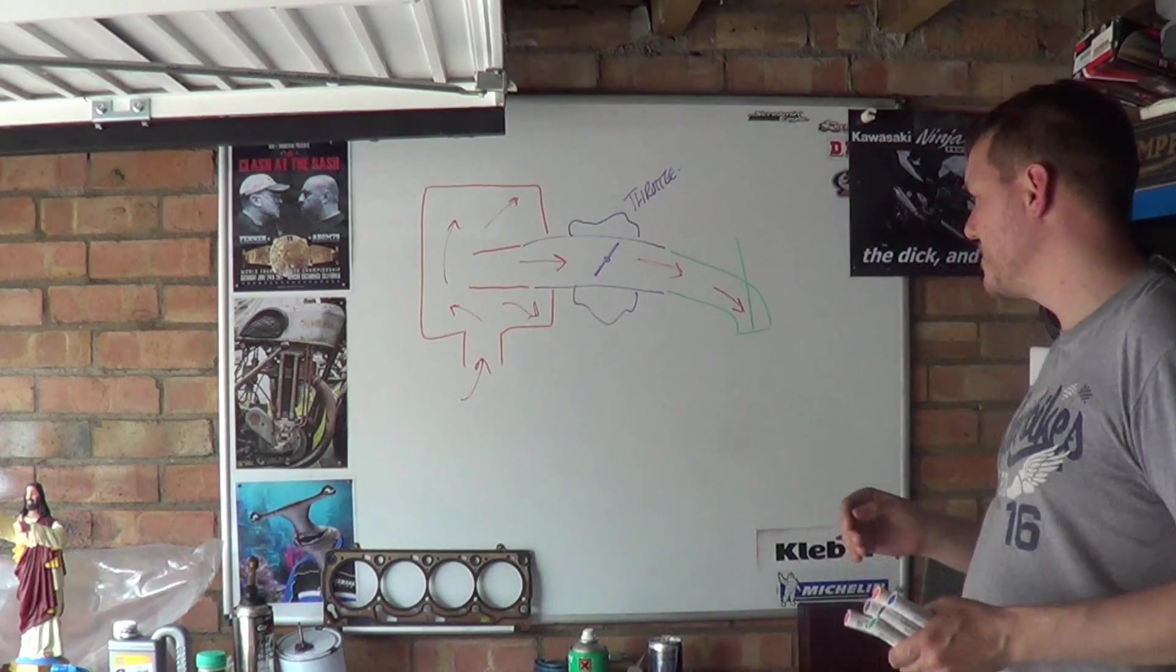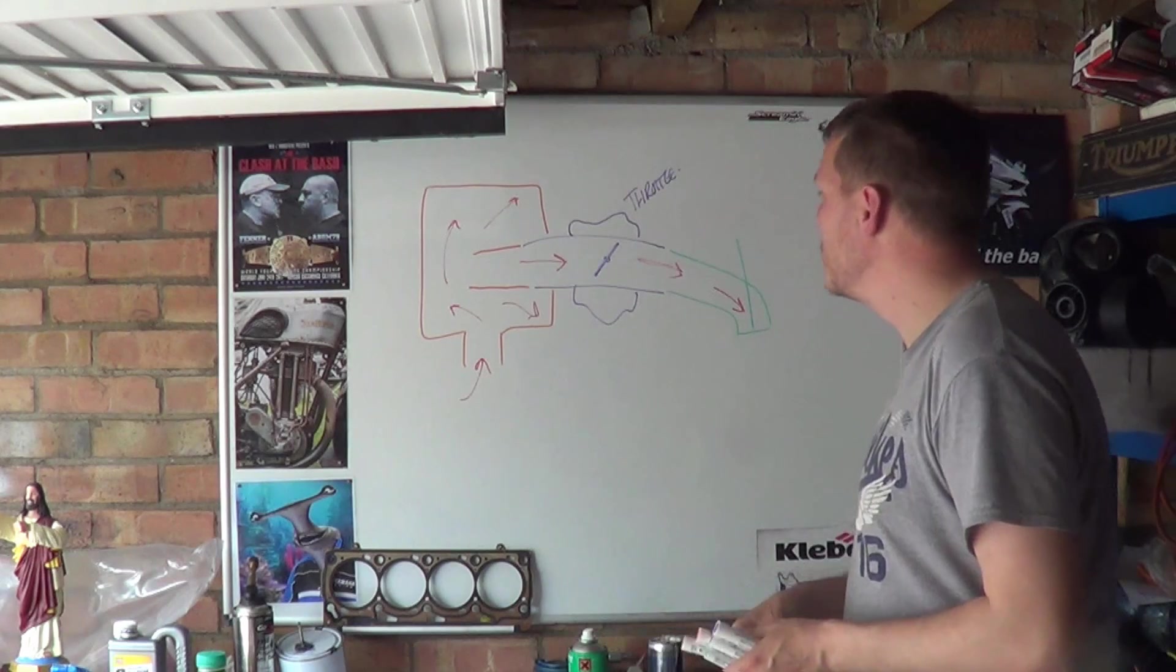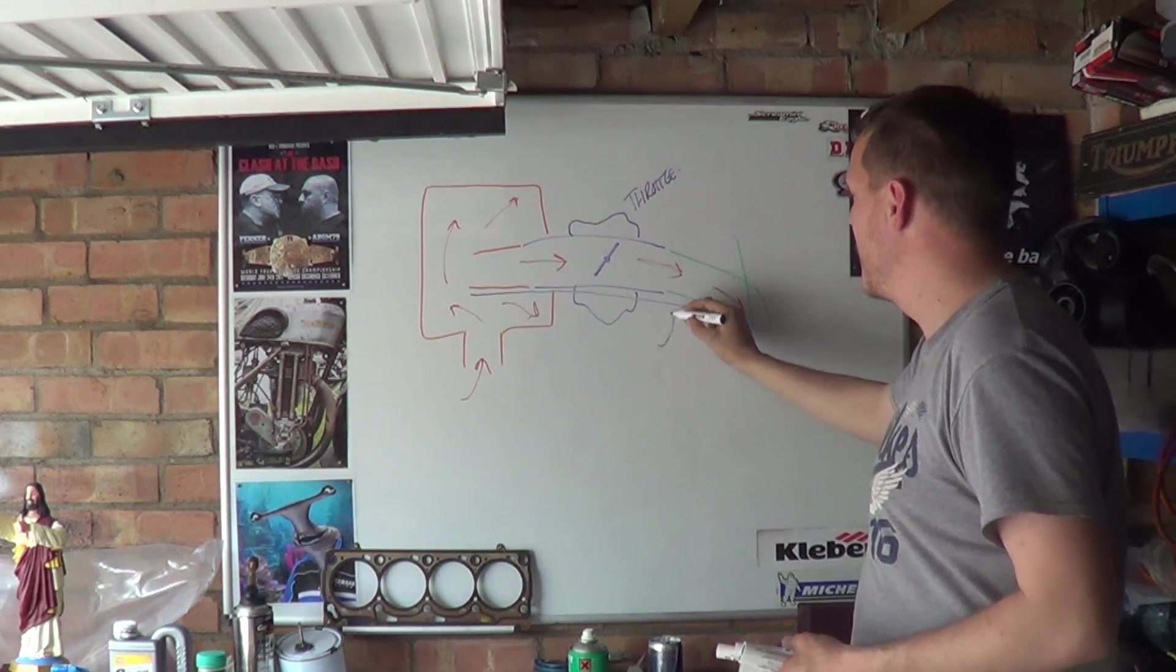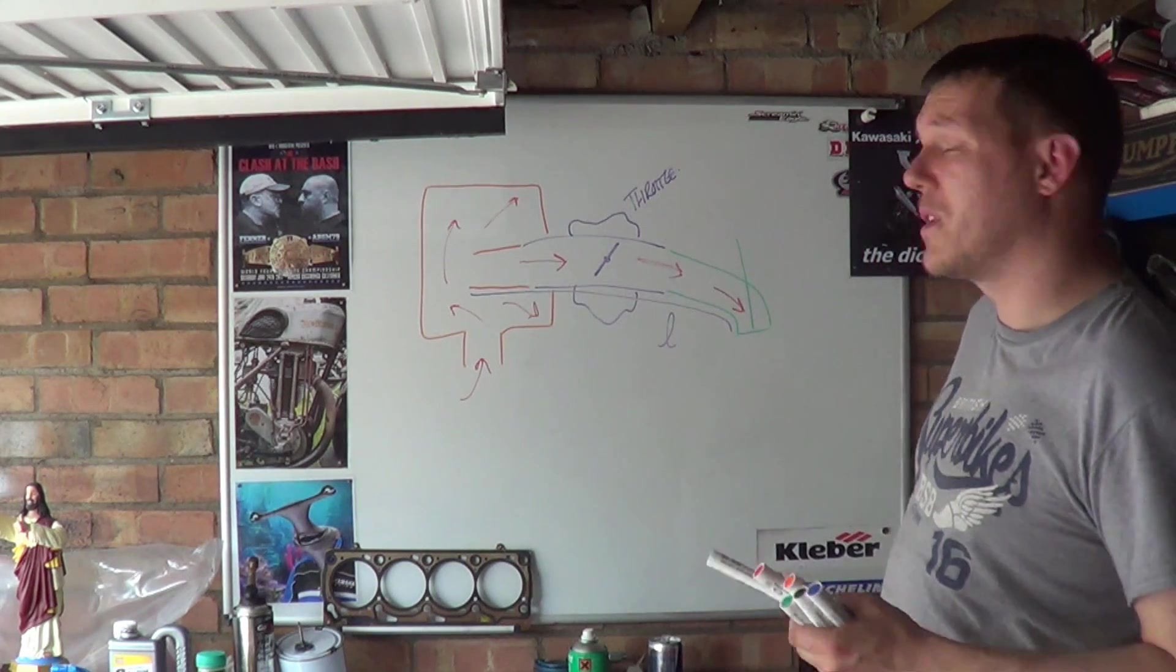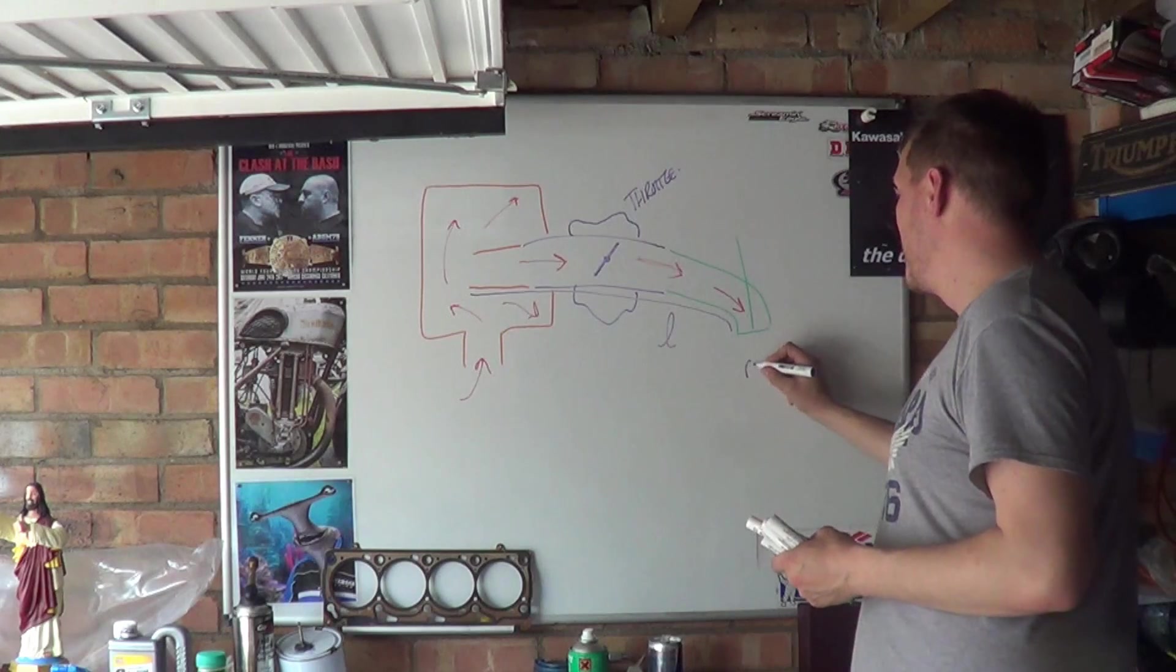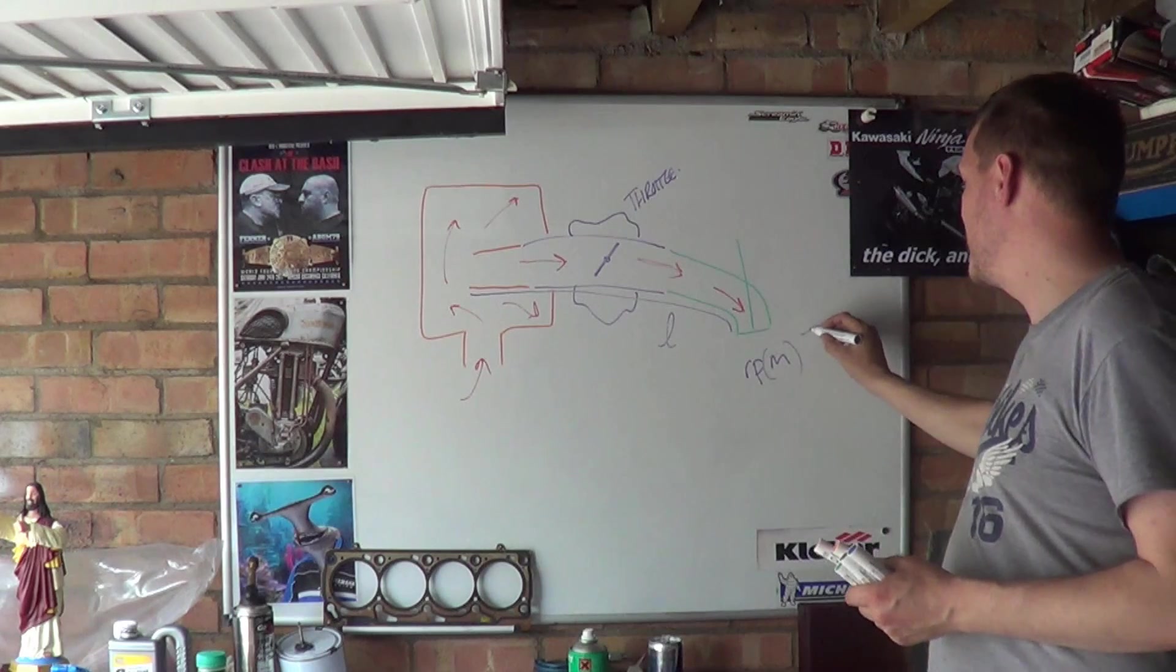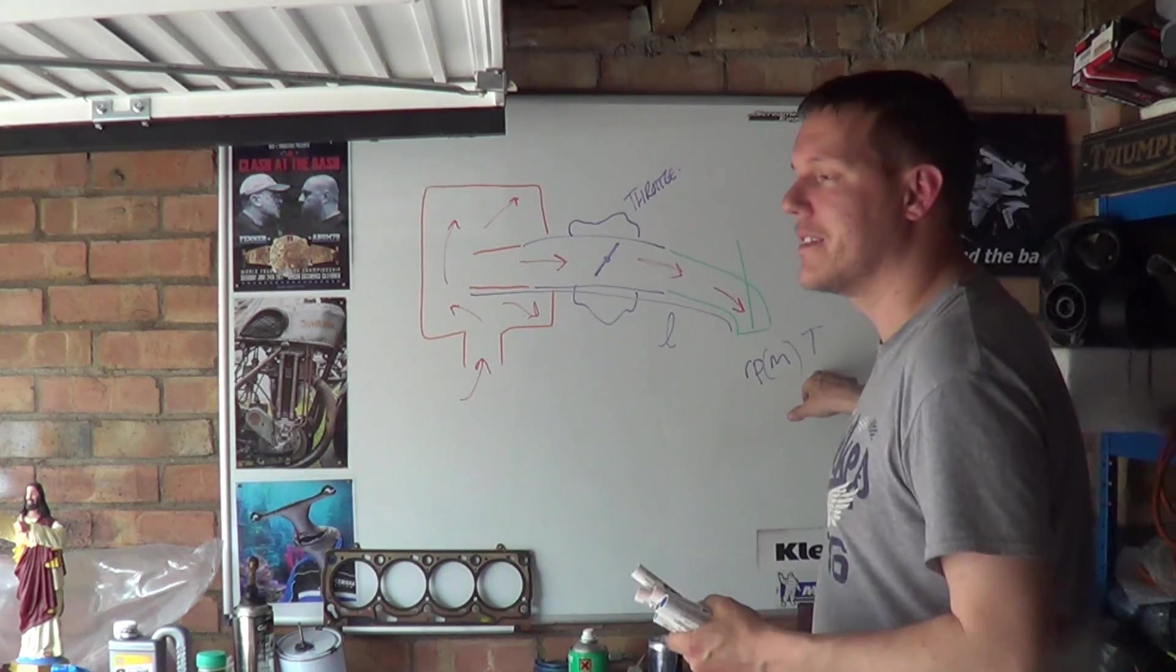The thing is, this is determined by two things. It is determined by the tract length here and the engine RPM. And the reason why the RPM is because the RPM is revolutions per minute and it's the minute bit because the minute is a time vector. This is your time component.